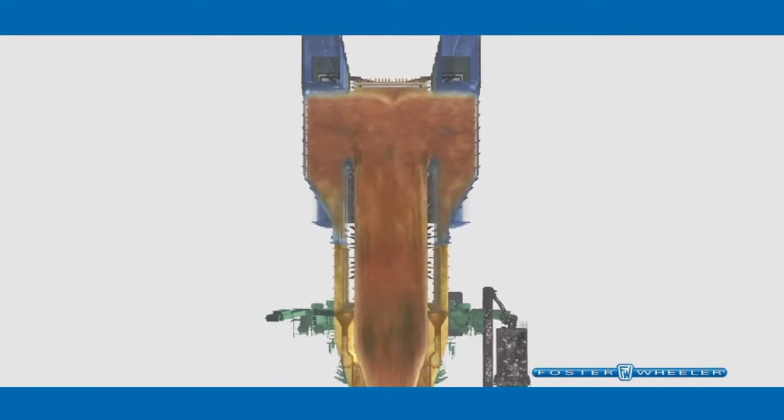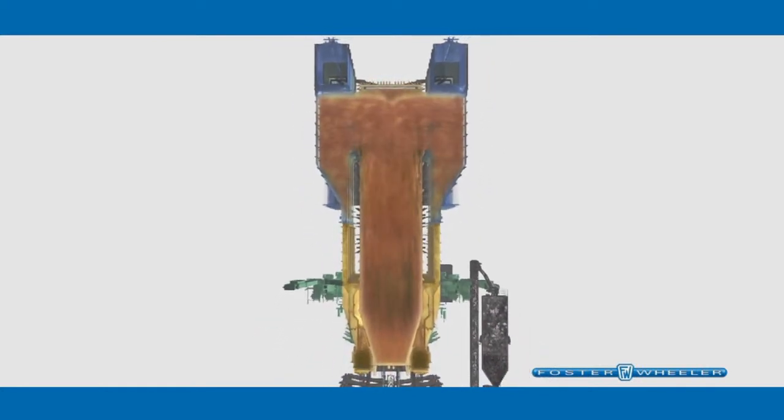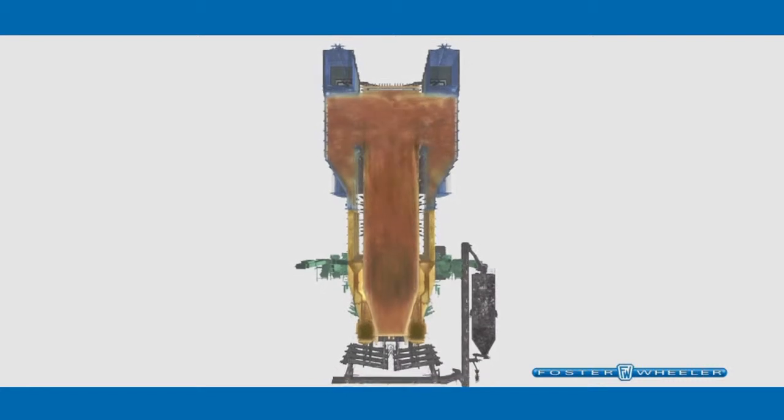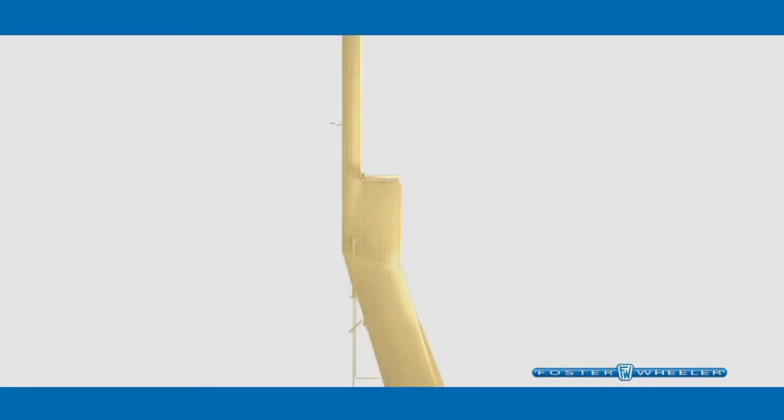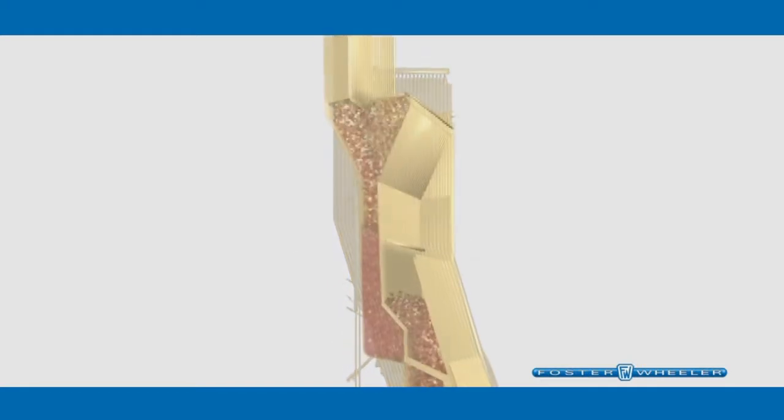Once separated from the hot furnace gas, the captured particles flow from the bottom of the solid separators and then into loop seals. The loop seals maintain the pressure balance between the furnace and the exit of the separators.